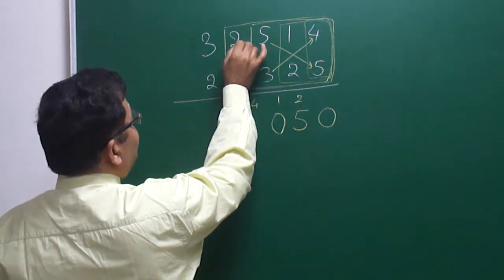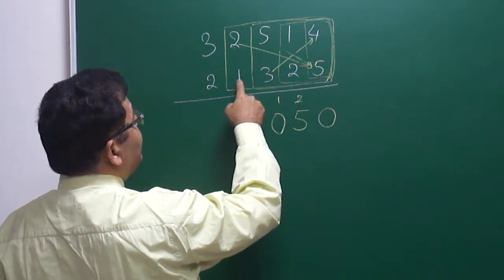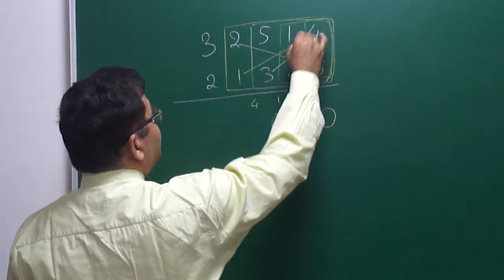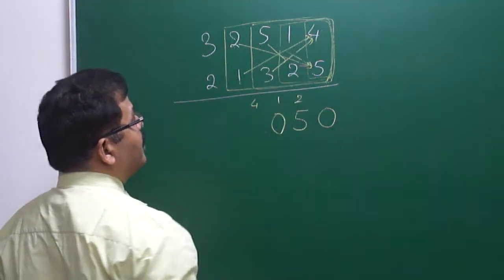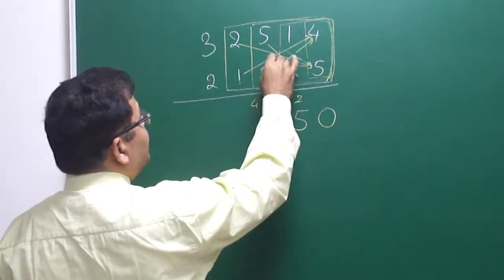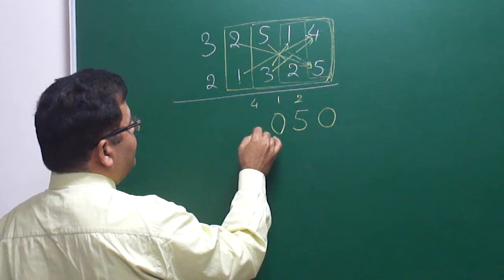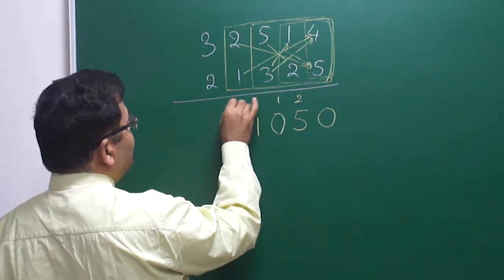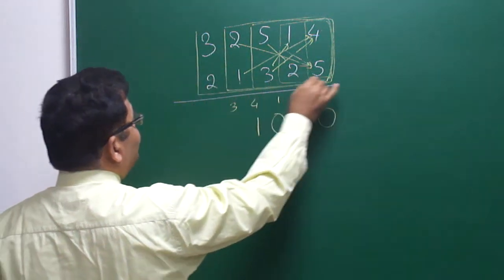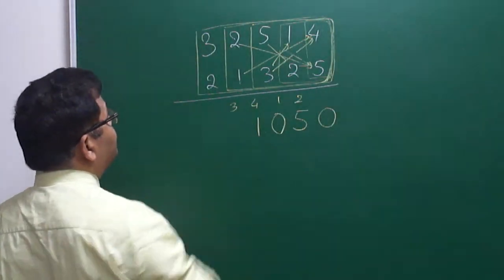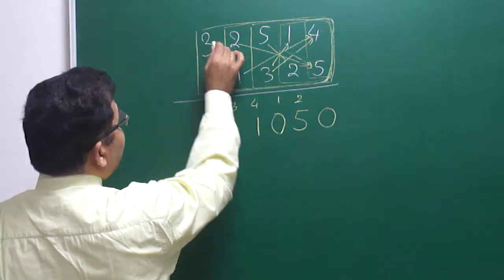Taking four at a time: 5 × 2 = 10, plus 4 = 14, plus 10 = 24, plus 3 = 27, plus 4 carry = 31, so write 1, carry 3. Now taking all five together — try to understand this cross multiplication.